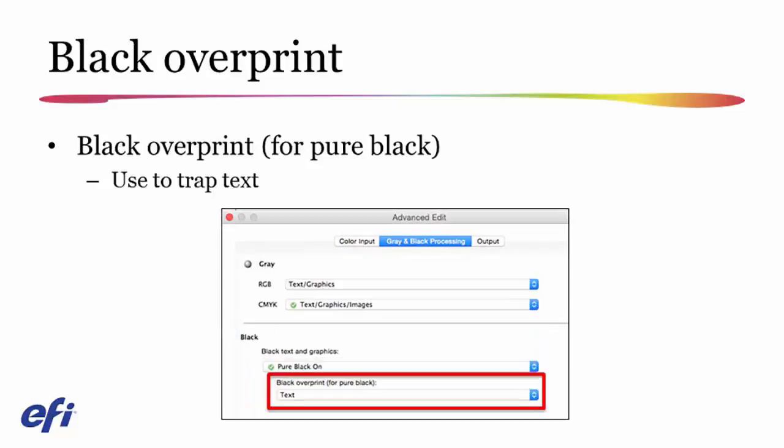If I'm using pure black, another thing I can do is enable overprint. I can enable overprint for different kinds of page objects, but if I'm using pure black on the Fiery, I probably want to set this to text only, since it's really only text that it's safe to overprint.